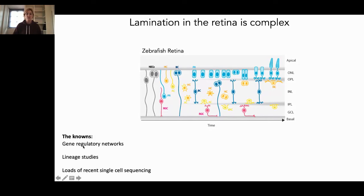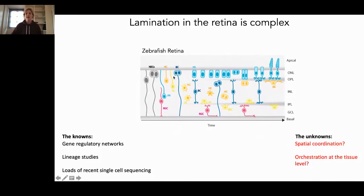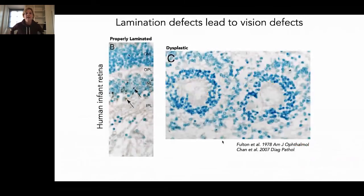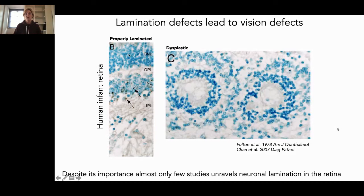What we know so far is the gene regulatory networks that underlie the specification of the different neurons. We have lineage studies to understand which neurons are born at which time point, and recently we also gathered a lot of single-cell sequencing data. What is not as well understood, however, is how this is spatially coordinated and, even more importantly, how this is orchestrated at the tissue level — because it's very unlikely that these cells all migrate in isolation; they have to influence each other during their migration. Lamination defects lead to vision defects, such as dysplastic retinas with rosettes of neurons forming.